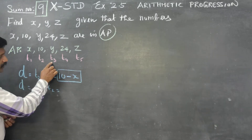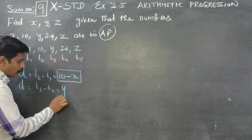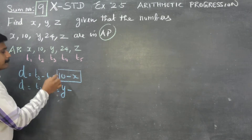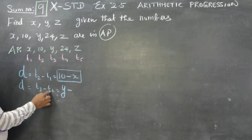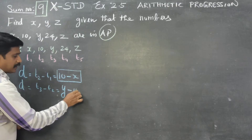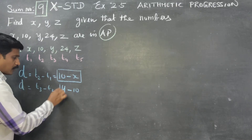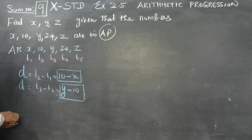What is t3? t3 is y. So t3 minus t2 equals y minus 10. This is another common difference.